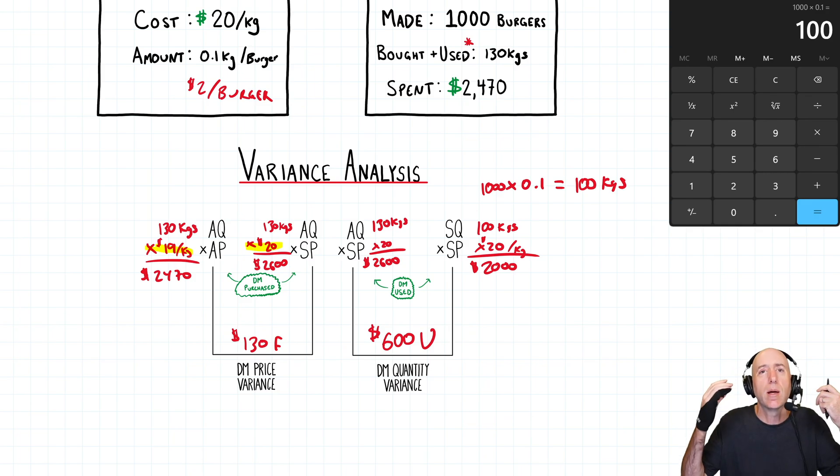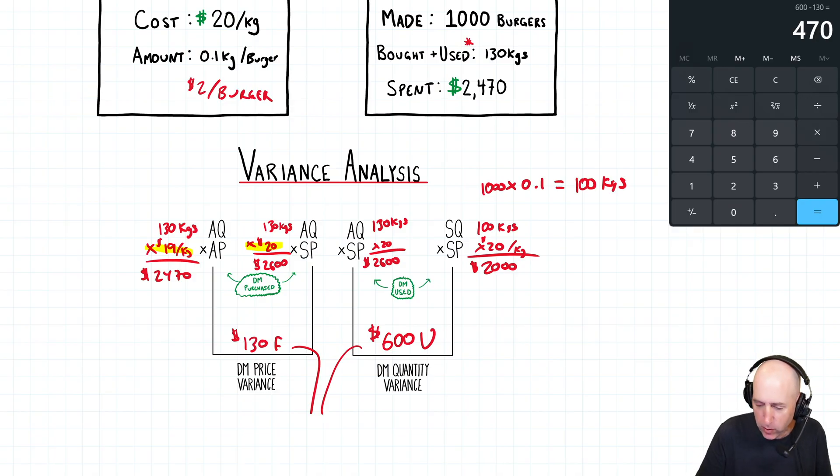If you made a recipe and you said the perfect burger uses 100 grams of beef and you're putting more beef in, yes, maybe your customers are getting a little more value, but you're not living up to your standard. And that is the problem here. At the start, we said Bill blew his budget by four hundred seventy dollars. This breaks it down, though. If you combine these, you go six hundred dollars unfavorable and one hundred thirty dollars favorable. Take the big one minus the small one. The big one gets the balance. Yeah, we're overall four hundred seventy dollars unfavorable, but now we know a lot more about why.